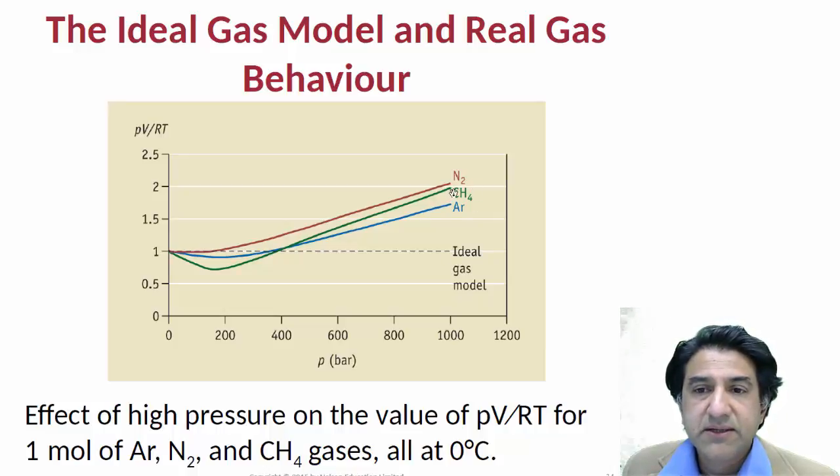For example, methane and nitrogen at 1000 bar pressure, the ratio is equal to 2. So we would have, for one mole of gas, PV equals 2 RT. That's a 100% error, 100% error, if you use the ideal gas model at 1000 bar pressure.